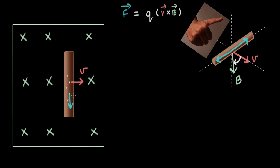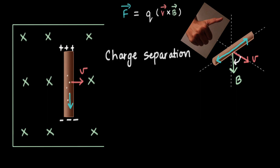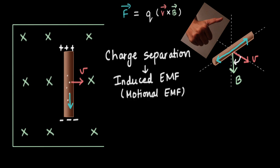As a result, all of these electrons start moving towards the lower end of the rod, and the lower end becomes negatively charged. That induces a positive charge at the top end of the rod. It is this charge separation that leads to an induced EMF, and because this EMF is induced due to the motion of the rod we call it Motional EMF.